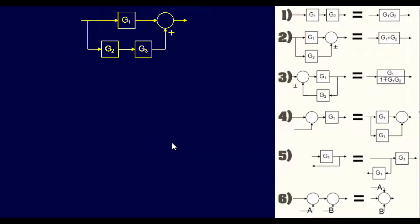We're going to start off with a relatively easy problem just to get our feet wet. For this one, we have one summing point and three blocks. We're going to start off with the easiest rule of them all — Rule 1: when blocks are in series with the same flow path, you multiply them together. For example, G1 and G2 are in series, so it's G1 times G2. Similarly, G2 times G3.